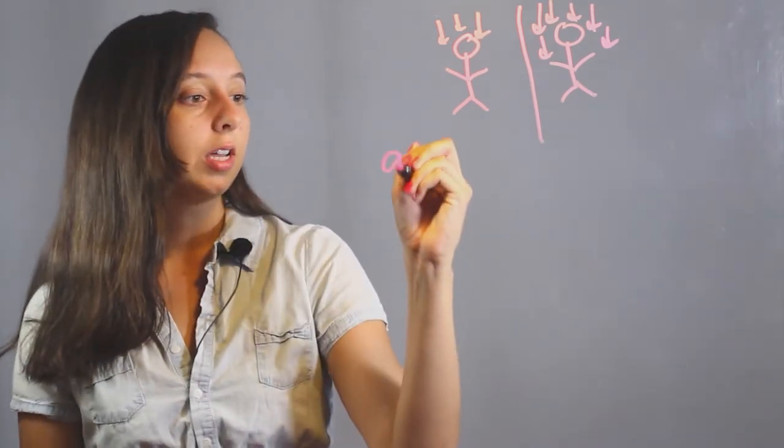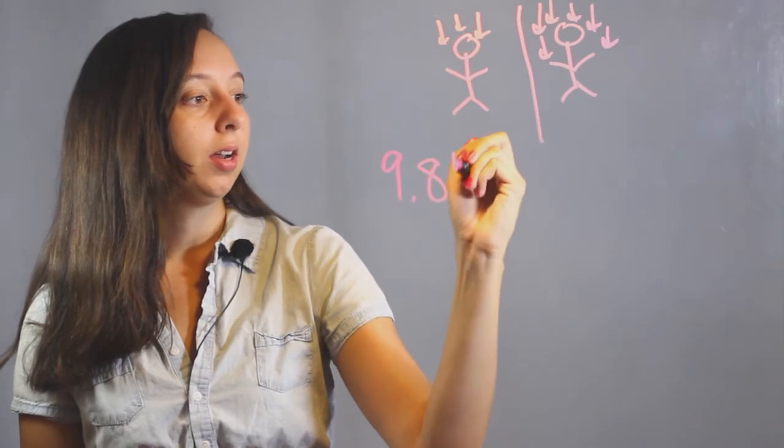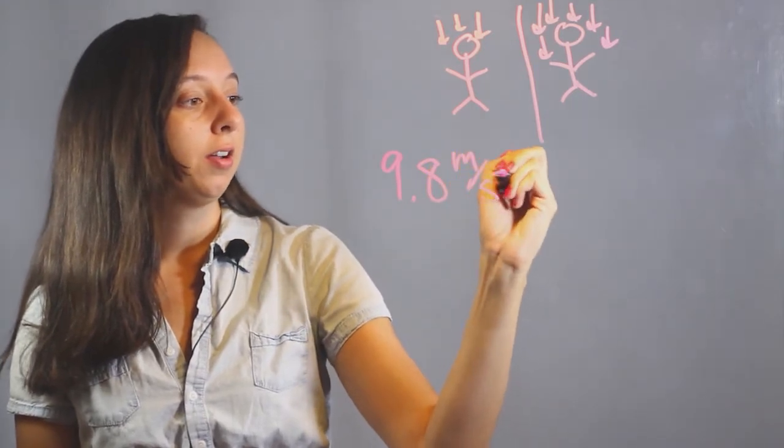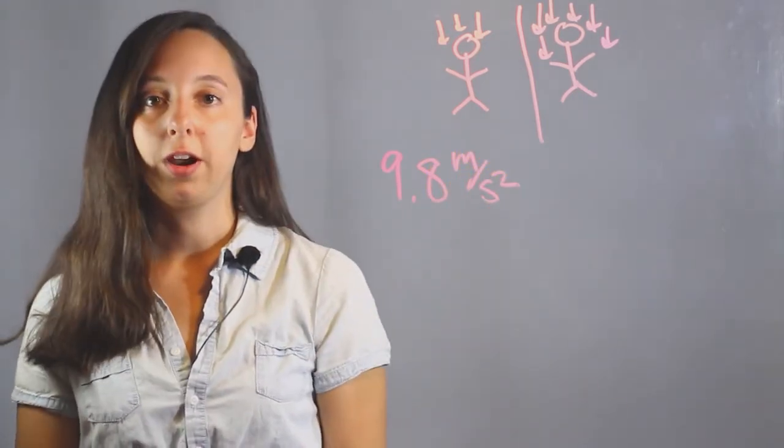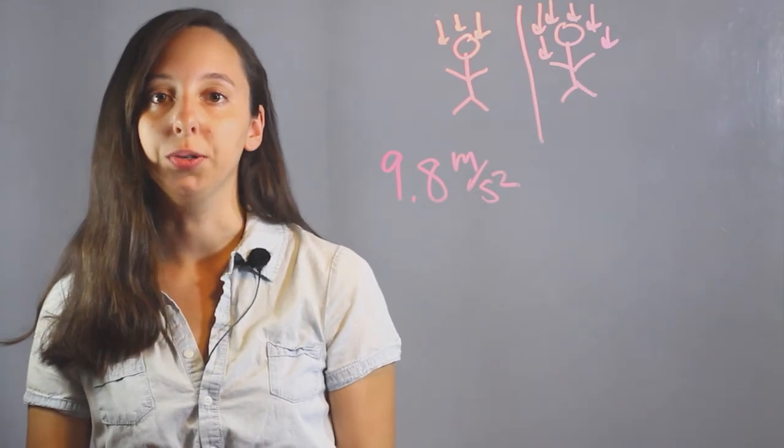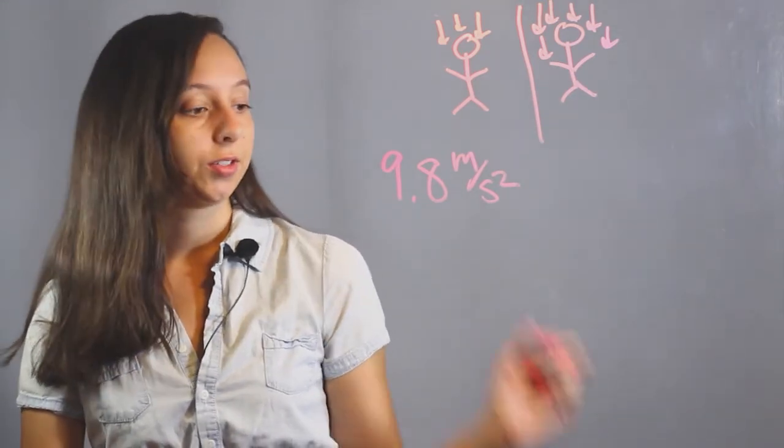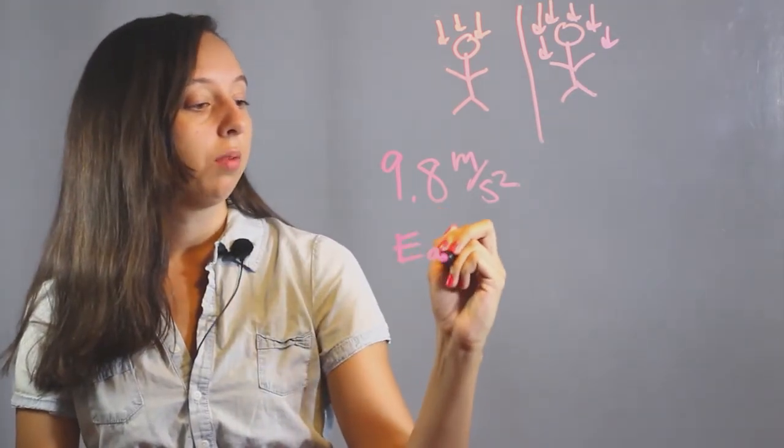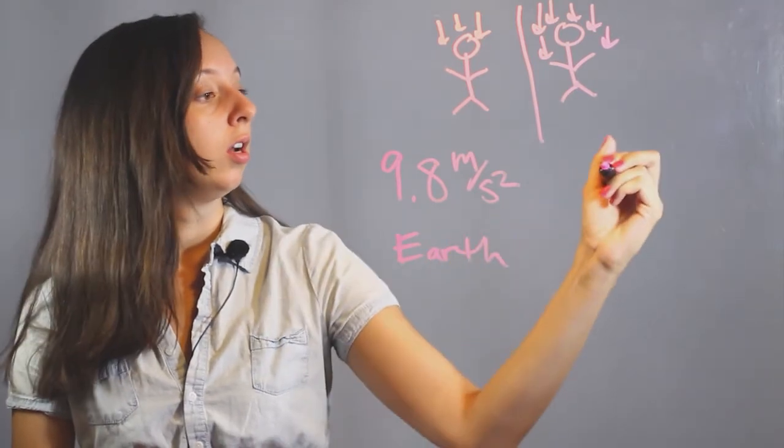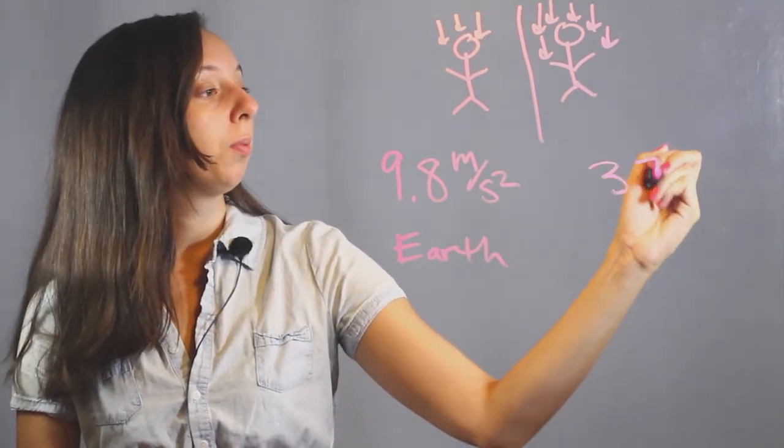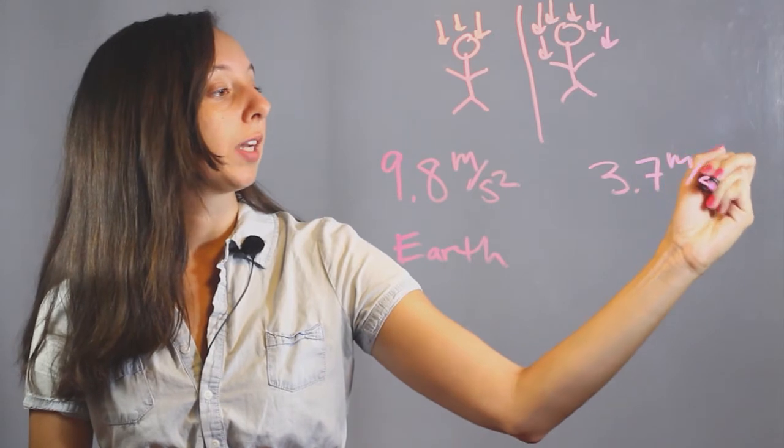So gravity on Earth is about 9.8 meters per second squared, and meters per second squared is the units that we're always going to use for defining gravity. And so on Mars, gravity is about 3.7 meters per second squared.